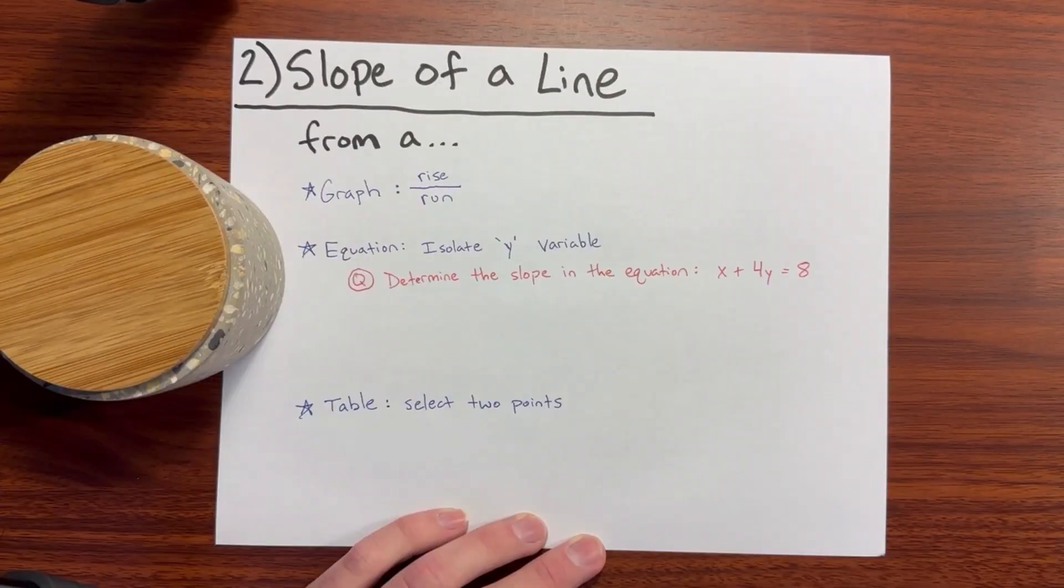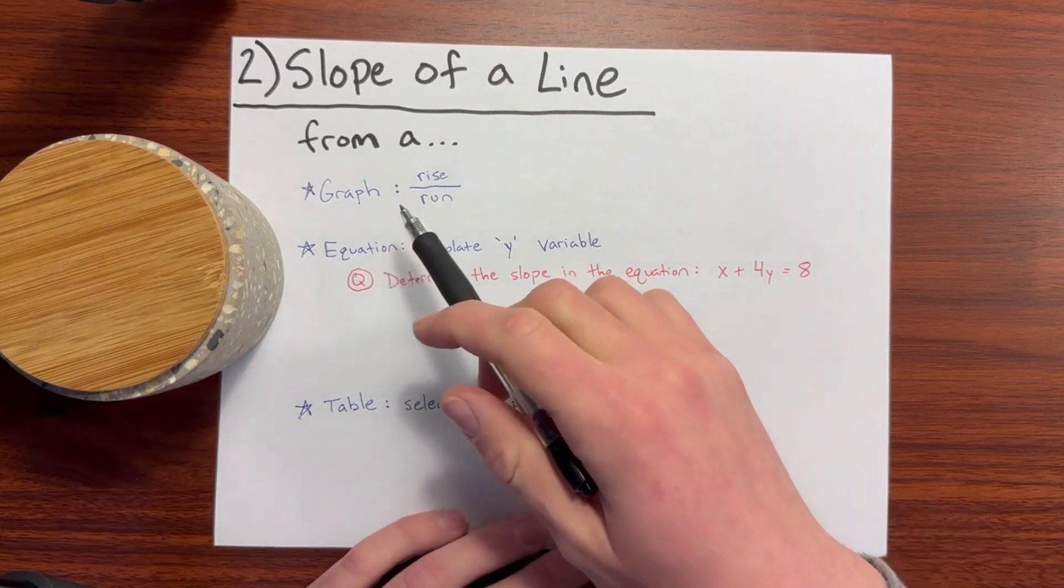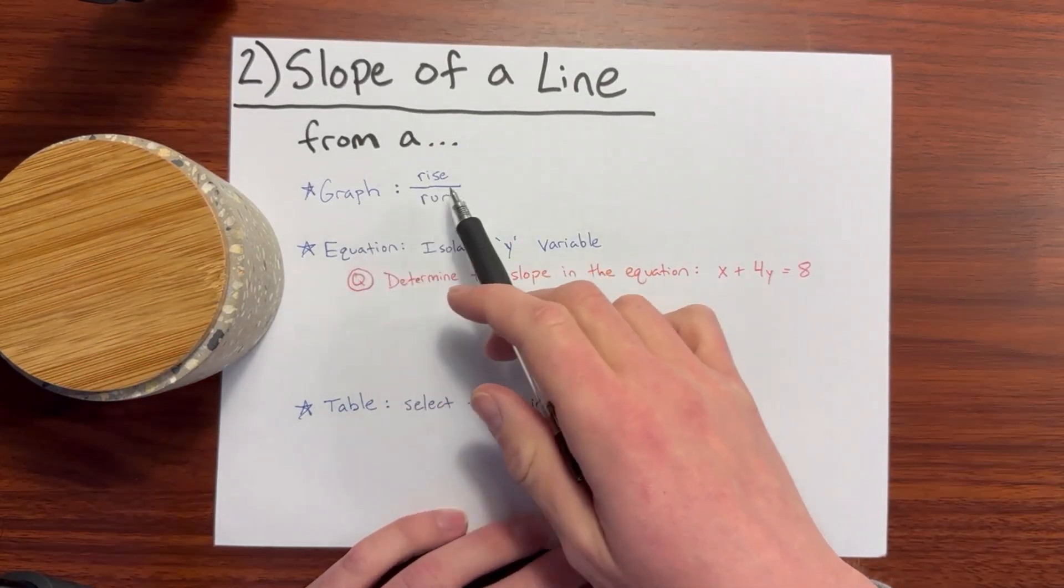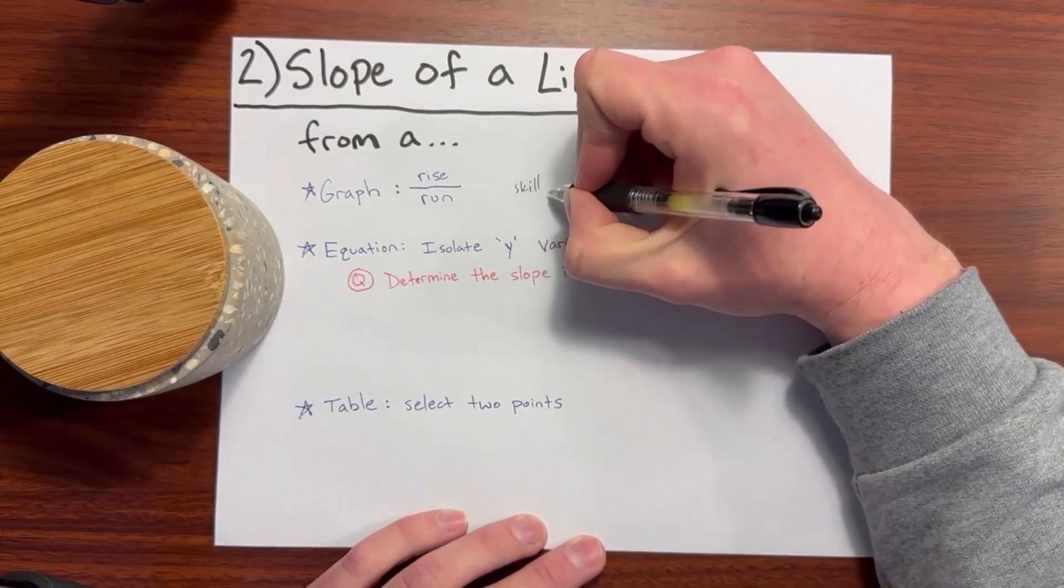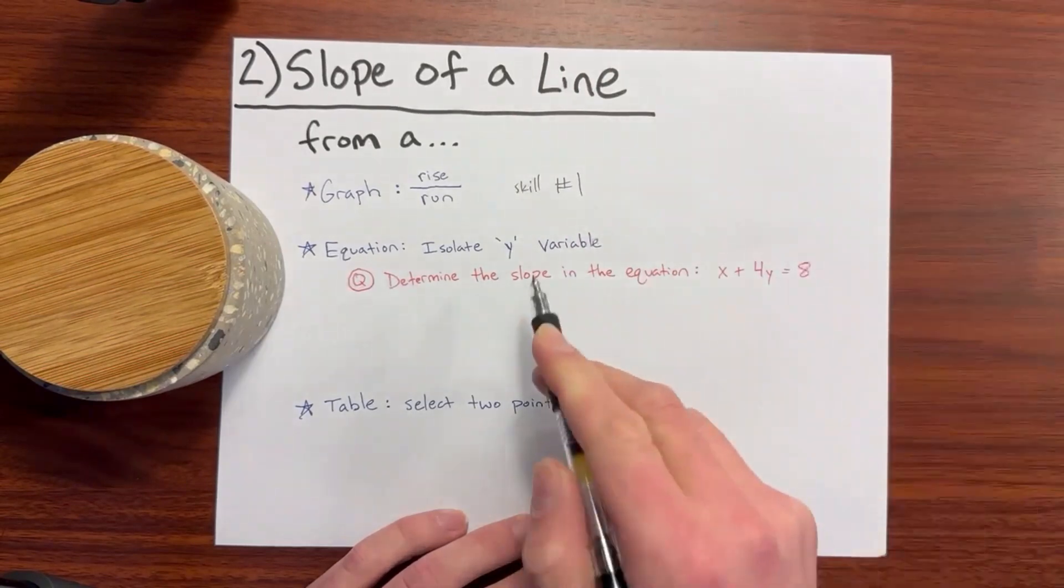Number 2: Slope of a line from a graph, equation, and table. To determine the slope of a line from a graph, it is the rise over the run which we covered in skill number 1. So jump back to that if you want to review.